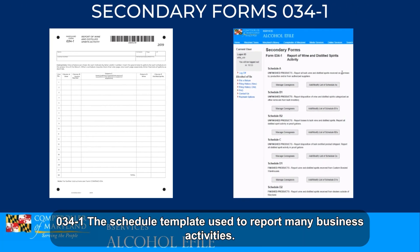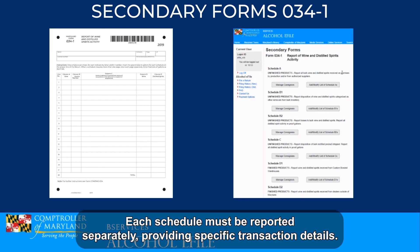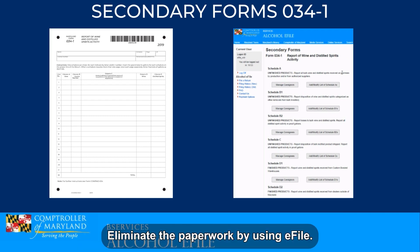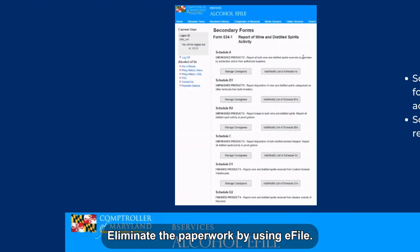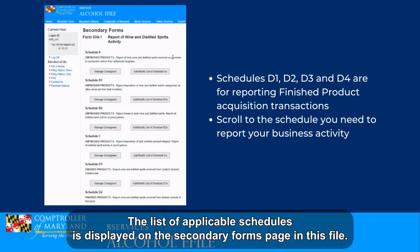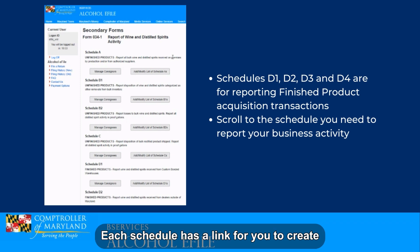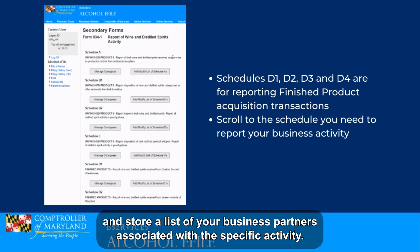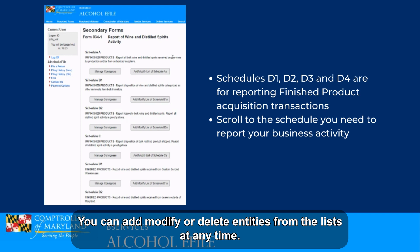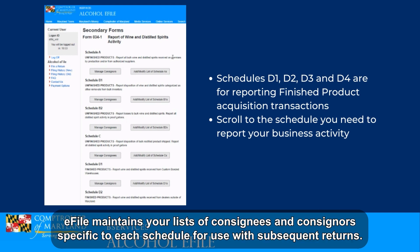Here is a view of form 034-1, the schedule template used to report many business activities. Each schedule must be reported separately, providing specific transaction details. Eliminate the paperwork by using e-file. The list of applicable schedules is displayed on the secondary forms page in e-file — select only the schedules required for your business activity. Each schedule has a link for you to create and store a list of your business partners associated with the specific activity. You can add, modify, or delete entities from the lists at any time. E-file maintains your lists of consignees and consignors specific to each schedule for use with subsequent returns.